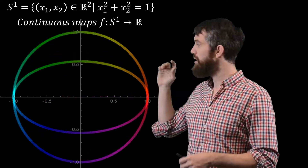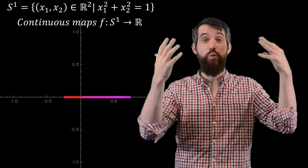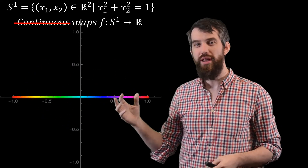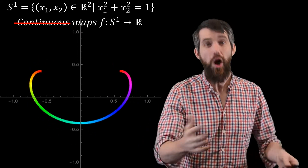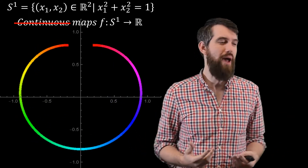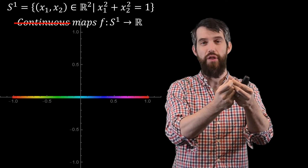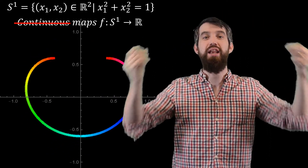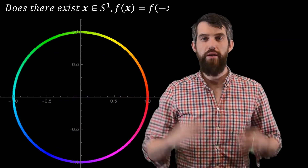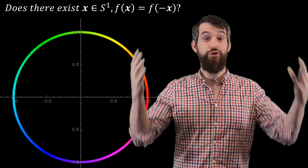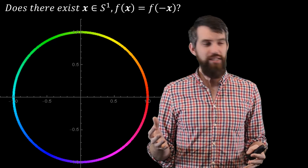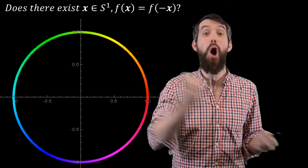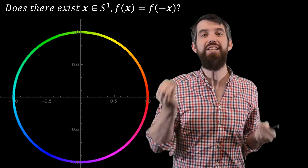This is not the only way we can do this — here's a different version. It also takes S1 and squishes it down to the x-axis, but in a more convoluted way. Finally, I have this example, and it's a bit weird — actually, it's not continuous. What I mean by a continuous map is that if you have two points that start close together, then they're going to end up close together as well. But in this case, you have two points that start close together and end up very far away. So this one is not continuous.